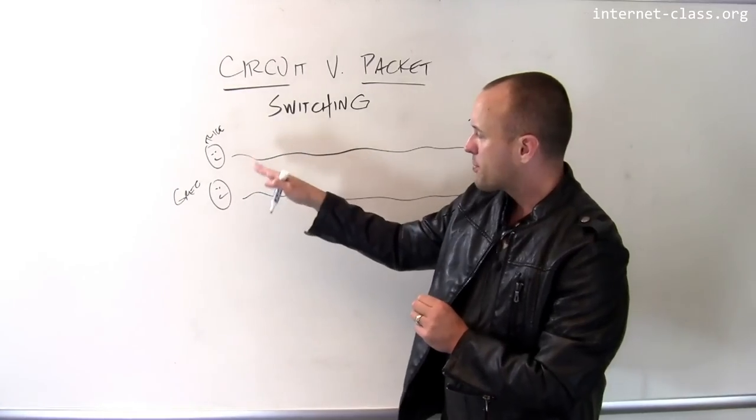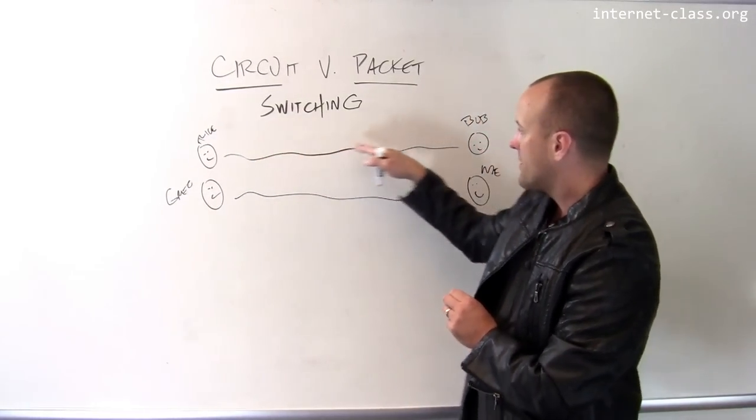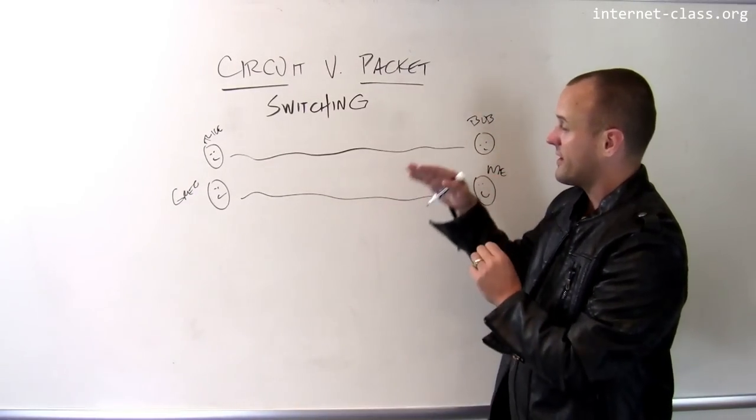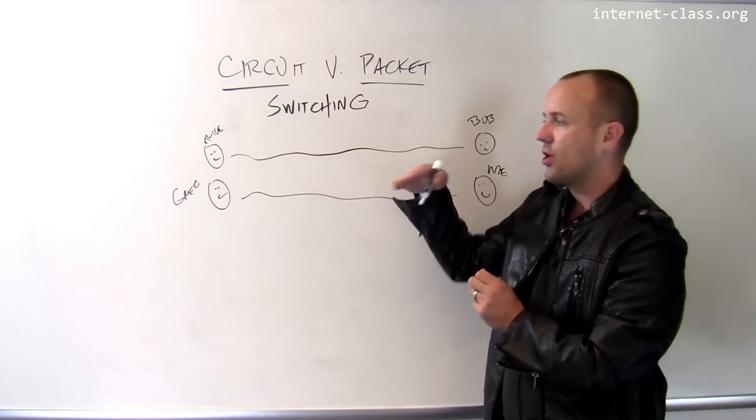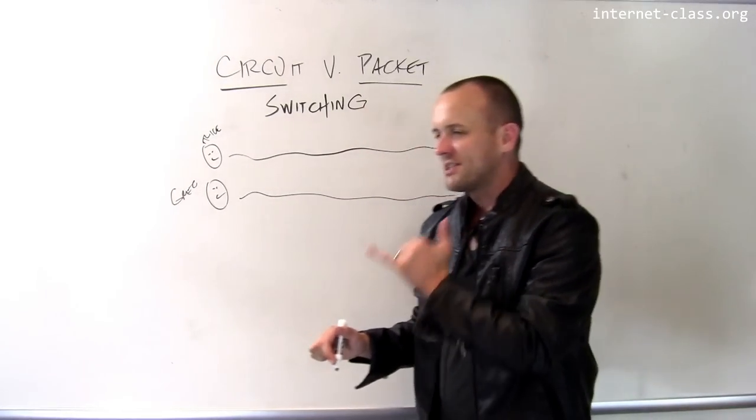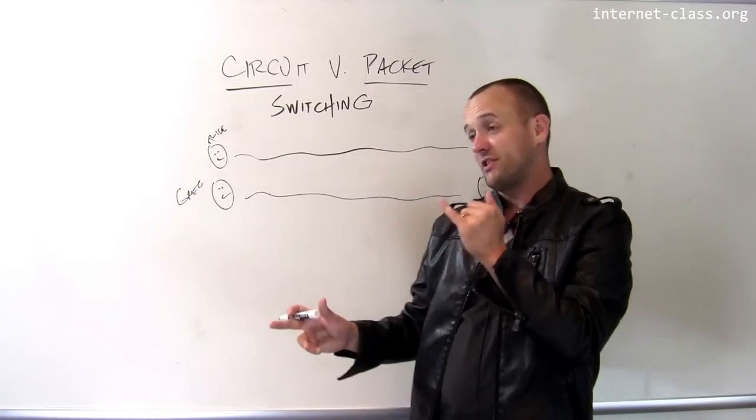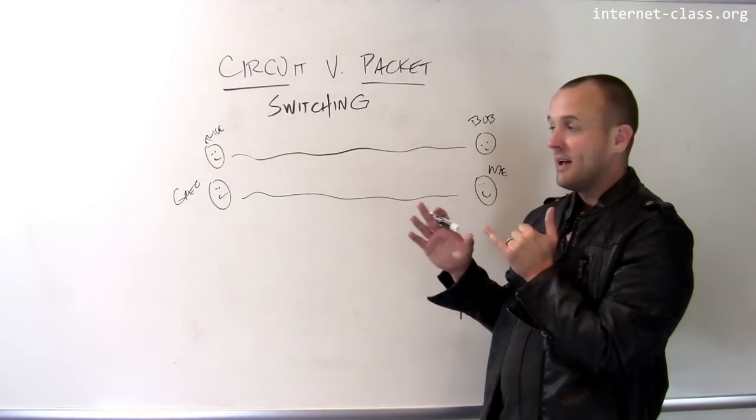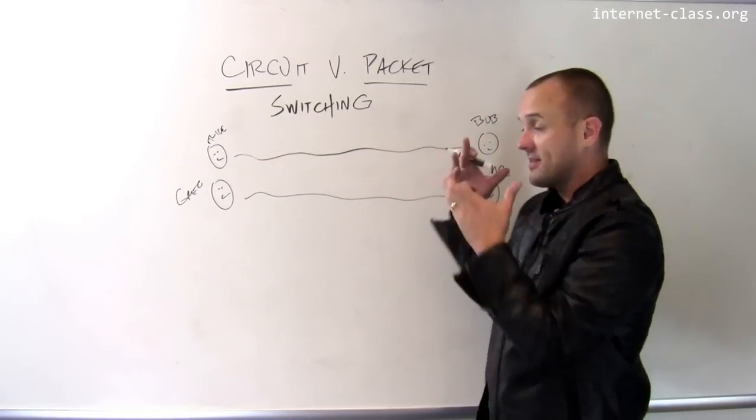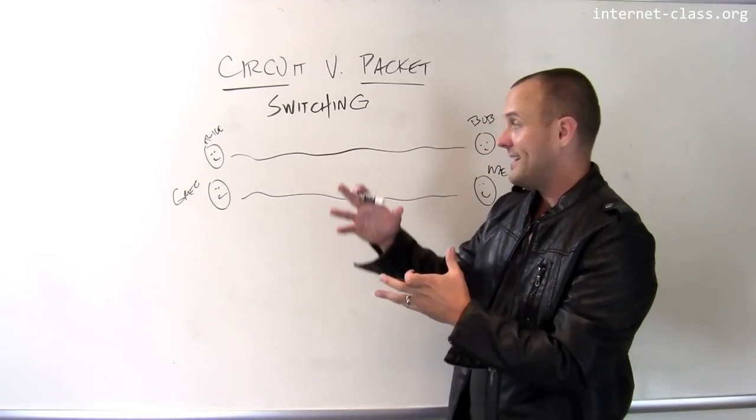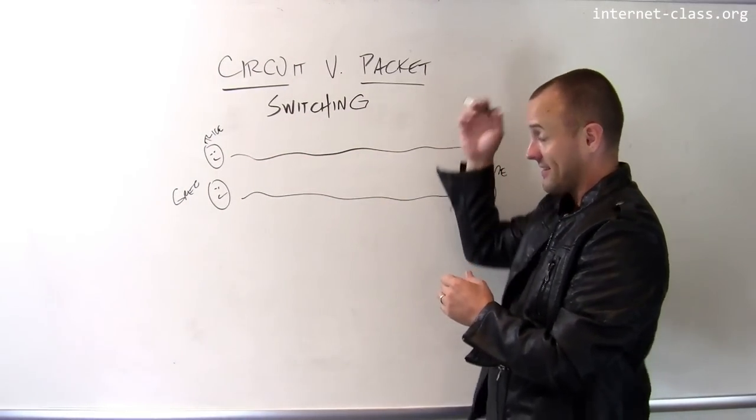And the other problem with this approach is that while these guys are talking, there's a fixed amount of network resources devoted to their conversation the whole time. So even if Alice calls up Bob and just sits there and doesn't say anything on the line because she's trying to creep him out a little bit, that circuit that the telephone company has established is sitting there the whole time, and I can't get rid of it until they actually hang up.